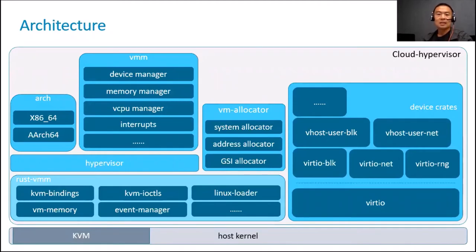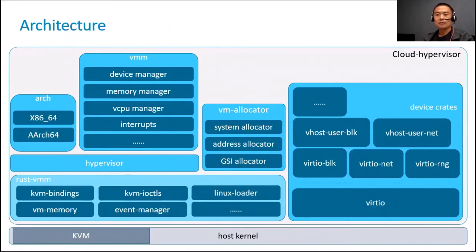Cloud Hypervisor is based on KVM, but that will not be the only choice in the future. From the second half of this year, Microsoft joined the community and began to extend Cloud Hypervisor to Hyper-V. A new crate was designed to wrap low-layer hypervisor details — that is the Hypervisor crate. It abstracts KVM details and provides a unique interface to upper layer components. Architecture-specific things are placed in the Arch crate. For ARM64, we have code handling GIC and FDT there.